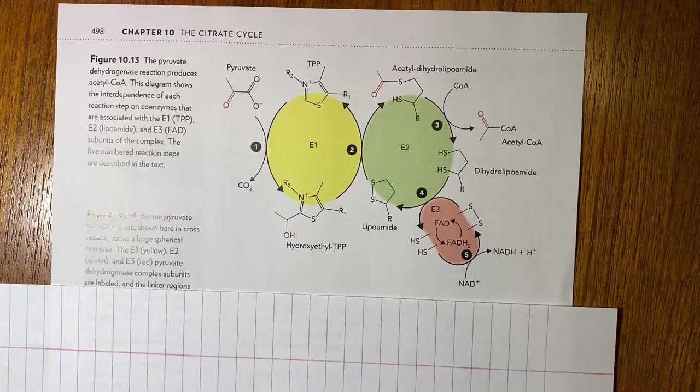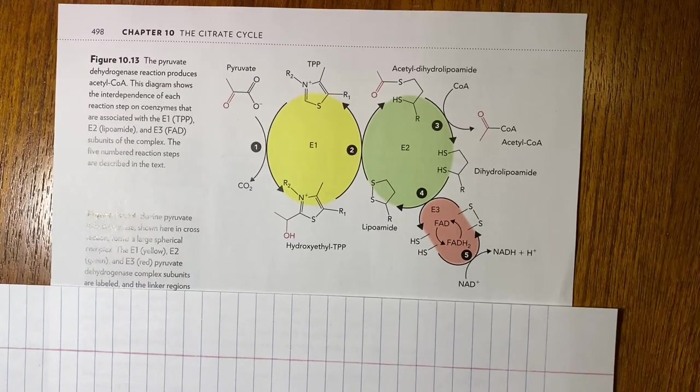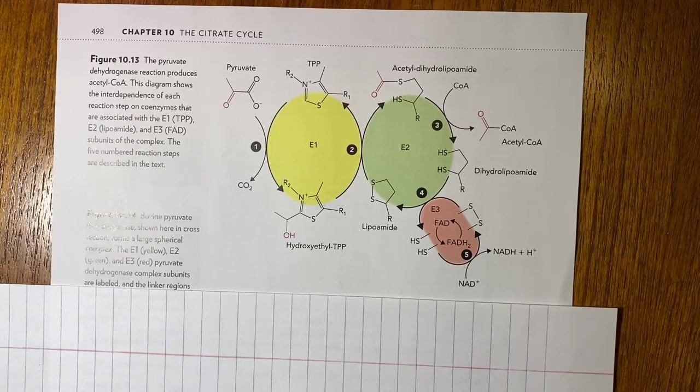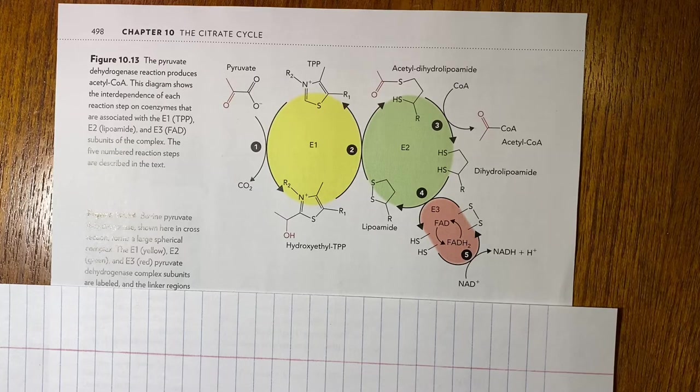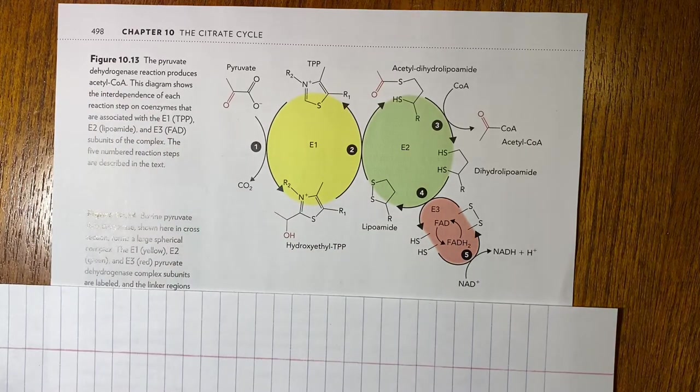So what this picture shows you is all the coenzymes and the three subunits for the pyruvate dehydrogenase complex or the PDH enzyme. Typically what the question will ask you is to explain the importance of the enzyme, and the importance of this enzyme is it produces acetyl-CoA which is the first reactant for the citric cycle.